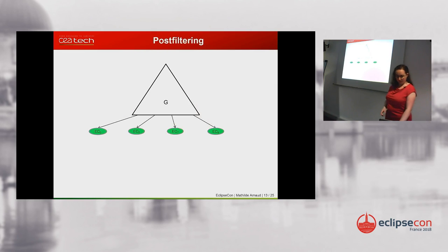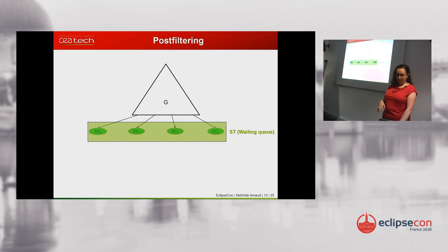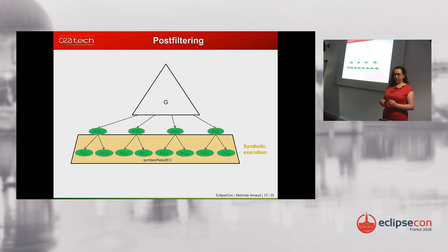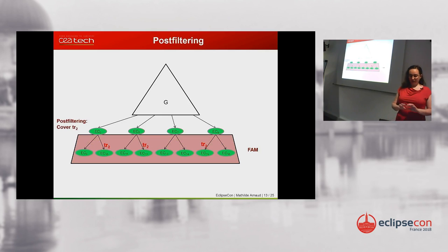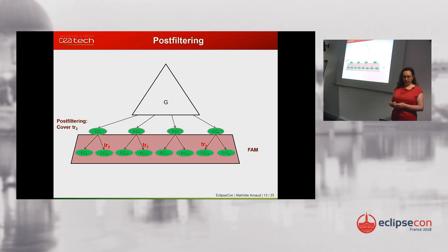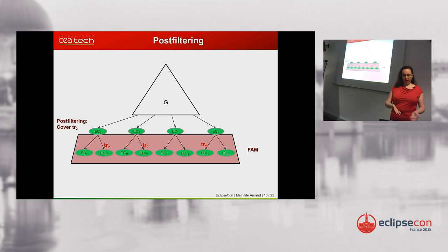For post-filtering, let me show it on an example. We have a waiting queue; symbolic execution computes the possible next states of the system, and then we apply post-filtering. Let's assume we are trying to cover some specific transition — say, transition T2. We check if any of the transitions triggered by the symbolic execution are indeed T2, keep those, and discard the rest.